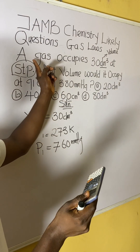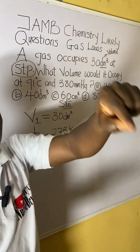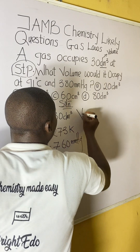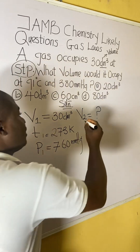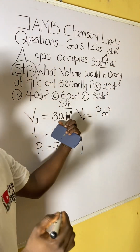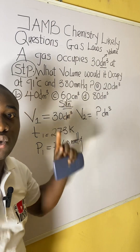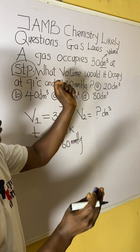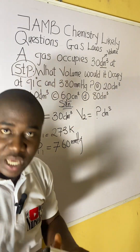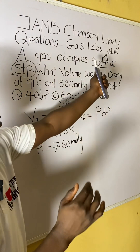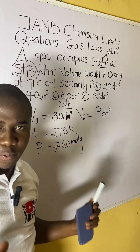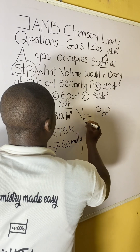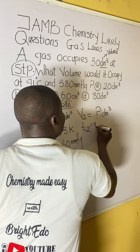Now let's progress. We have analyzed the first conditions. The question asks 'what volume?' — meaning they are asking for V2, the second volume. V2 is unknown and will be expressed in dm³ as well, since the initial volume was in dm³. If the options were in other units, we would convert accordingly, but here the units match.